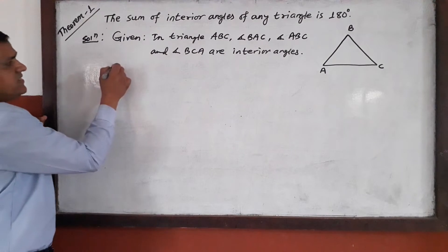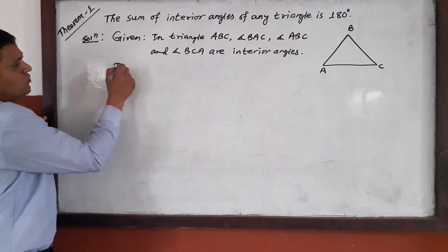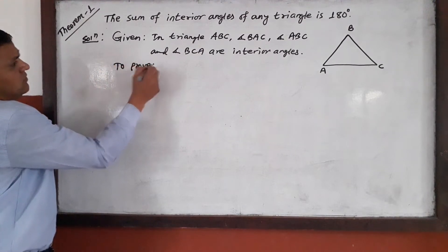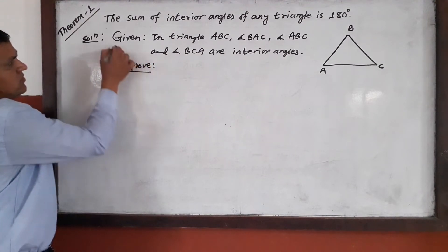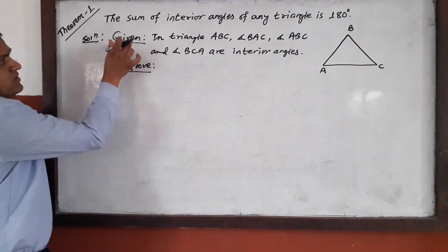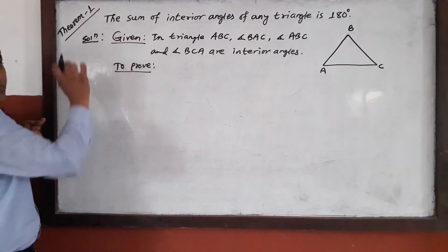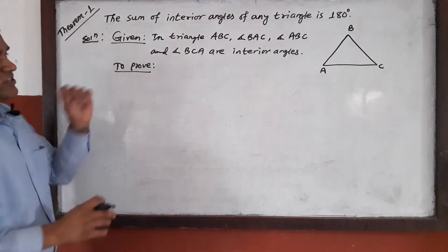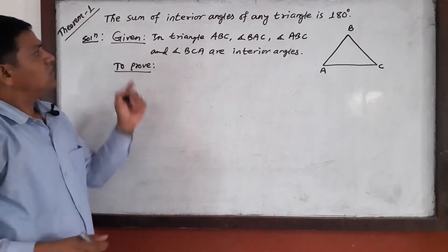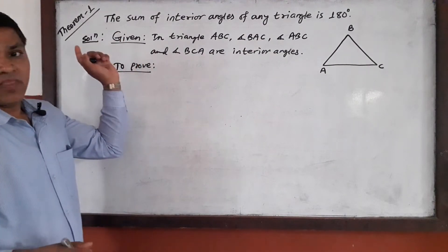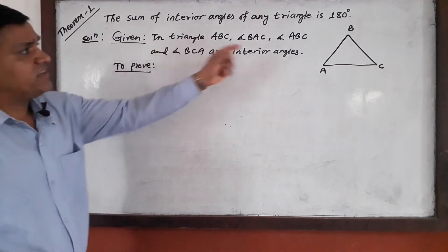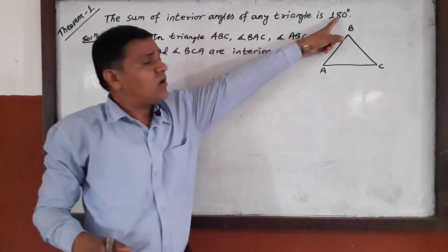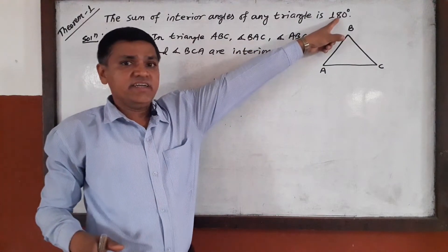Now the second step is 'to prove.' The first step is given; the second step is to prove. What is to prove? The sum of interior angles is 180 degrees.